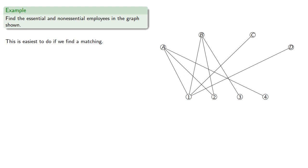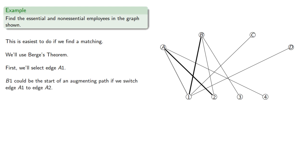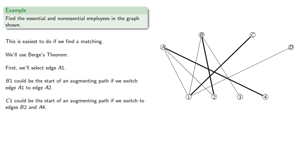So we might try to find the essential and non-essential employees in this graph. This is easiest to do if we find a matching. We'll use Berge's theorem. First we'll select edge A1. Now B1 could be the start of an augmenting path if we switch edge A1 to edge A2. And C1 could be the start of an augmenting path if we switch edges to B2 and A4. However there's no way we can include D.